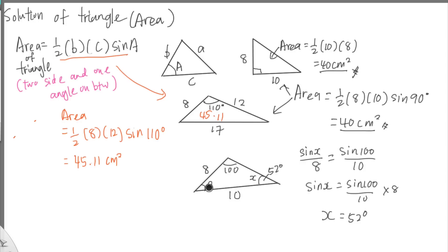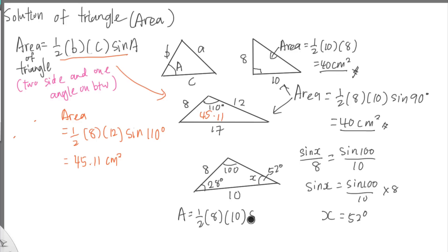Once you have that angle, you can find the third angle using 180 minus the two known angles: 180 minus 52 minus 100 gives you the included angle between the sides of length 8 and 10. Then you apply the area formula: area equals one half times 8 times 10 times sine of that included angle, which gives approximately 18.78 cm squared.